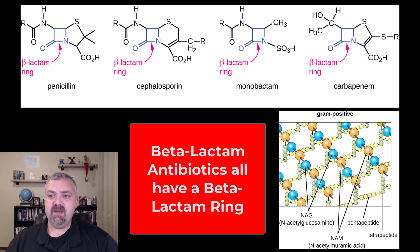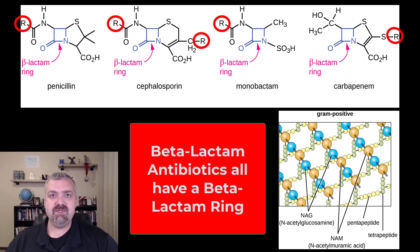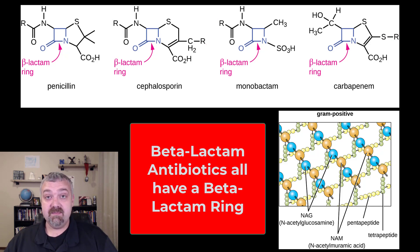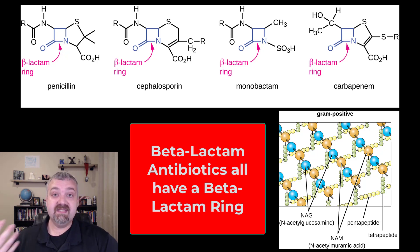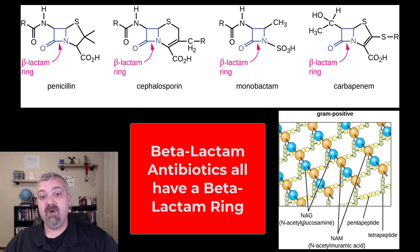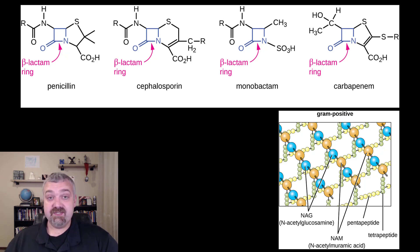The differences are going to be primarily where you see the R groups. The slight changes in these R groups are what make these antibiotics different — some can survive the trip through the stomach and be taken orally, others have extended spectrum, and others resist some of the resistance factors that bacteria have come up with. The fact that they're similar is important, but their differences are primarily why they all exist.